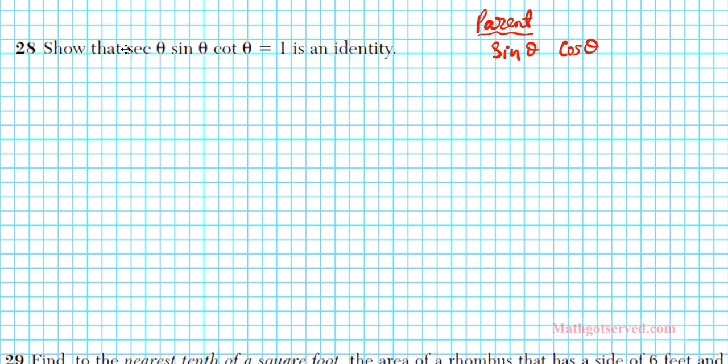Let's recall some of our identities. Secant theta is a reciprocal identity. Secant theta is equal to 1 over cosine theta. So I'm going to replace that secant with 1 over cosine. Remember, the only trig functions I want to see here are the parent trig functions sine and or cosine.